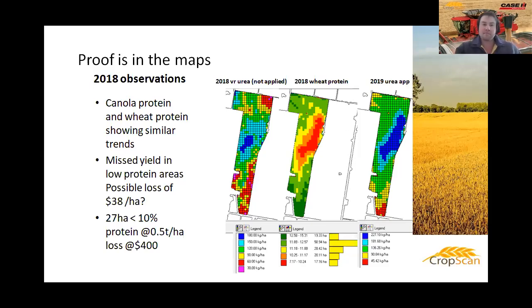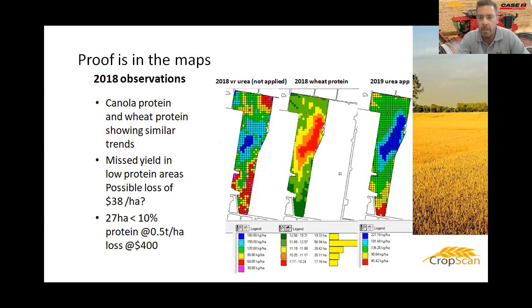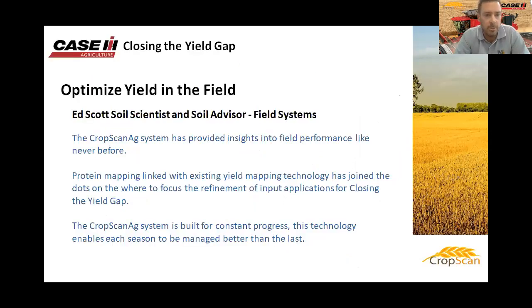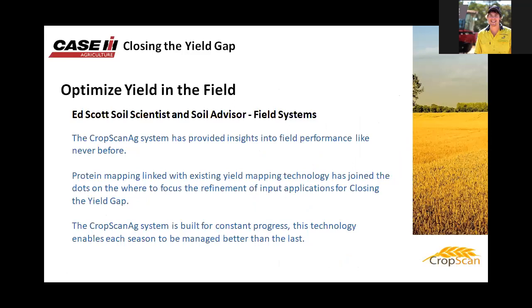Thank you, Broden — that was excellent. You took on the on-combine grain analyzer in 2016, started with blending, and really turned it into a nitrogen management tool — taking data from year one and two and turning it into meaningful information. Next I'd like to introduce Ed Scott. Ed is a soil scientist and advisor with Field Systems in South Australia. He's been working with us for about five years now to make sense of the data — we made a tool to measure protein, moisture, and oil accurately, and Ed has been giving us guidance to simplify and make sense of the protein layer's linkage to nitrogen.